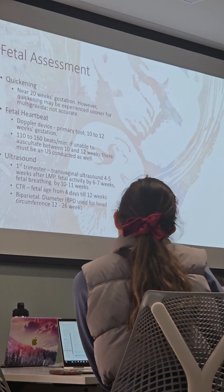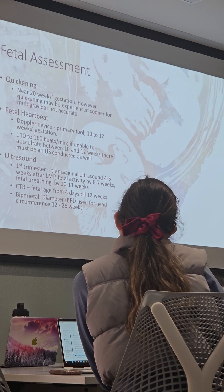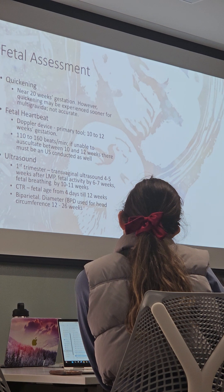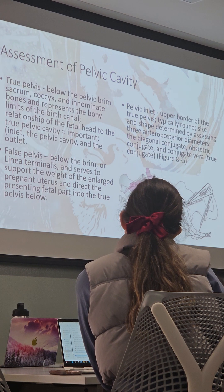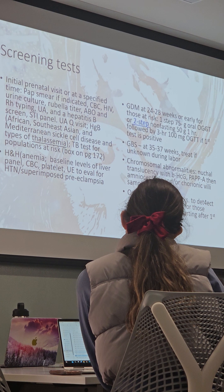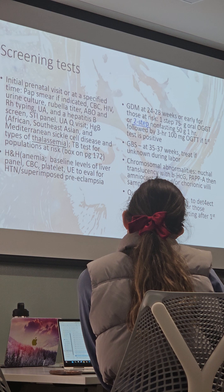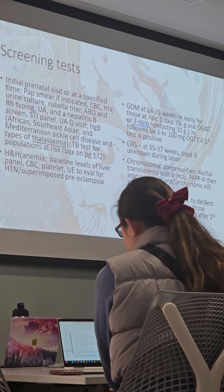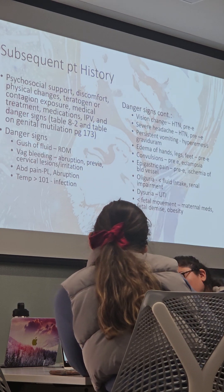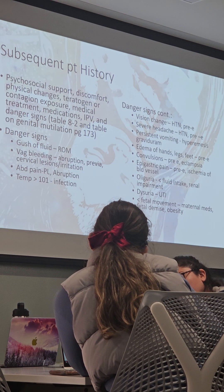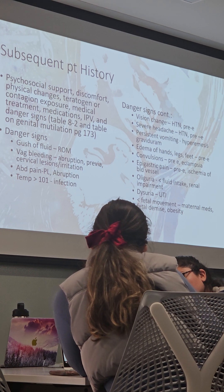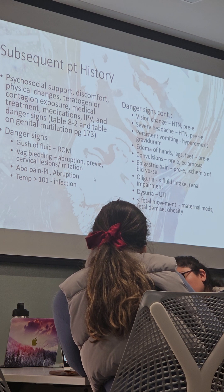Know quickening and when somebody should feel it. Know when the heartbeat would be detected. Know when we do the screening tests for GDM, GBS, and chromosome screens. Know the danger signs — vaginal bleeding, abruption, previa — know the difference between the two.